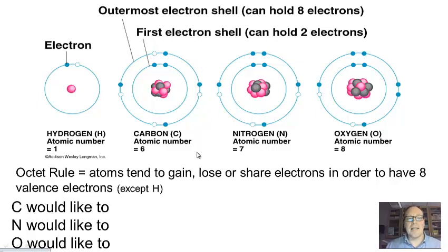We have something called the octet rule. The general idea is that atoms will tend to gain, lose, or share electrons in order to have eight valence electrons. There's an exception for hydrogen. Hydrogen will behave so that it'll gain or lose electrons. Normally, what it does is it loses this electron so that its level is full. It could also share another electron and fill this empty gap and fill up that inner level electron shell.